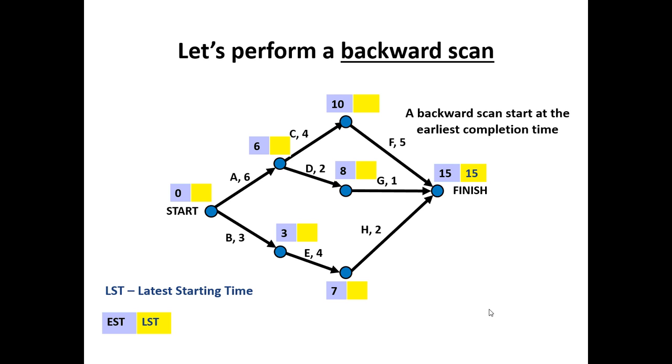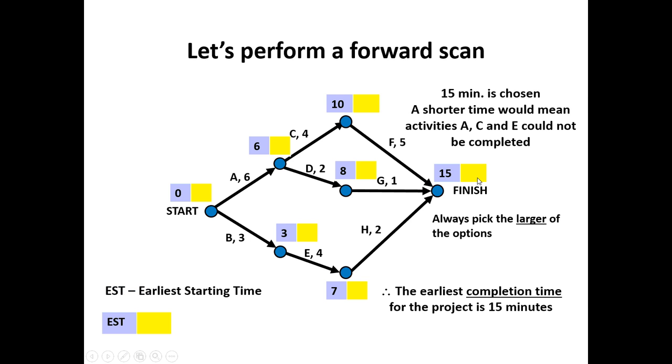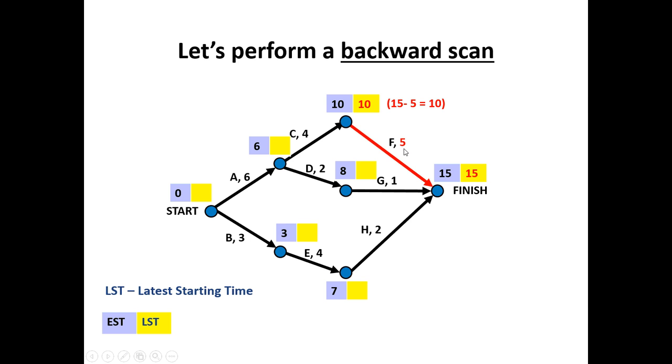Let's now consider a backwards scan. We're now using the yellow squares or rectangles. We start by copying in the earliest completion time, fifteen, into the first box. Now we work backwards. Fifteen minus five gives me ten. Fifteen minus one gives me fourteen. Fifteen minus two gives me thirteen.